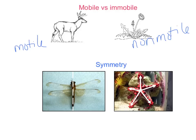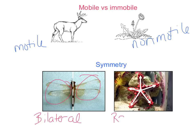We also have symmetry, and two basic kinds. Bilateral symmetry is where the right and left mirror one another — the right half of this dragonfly is the same as the left half. Radial symmetry is a distribution of duplicate body parts that all radiate out — the same body part repeated in multiple directions.